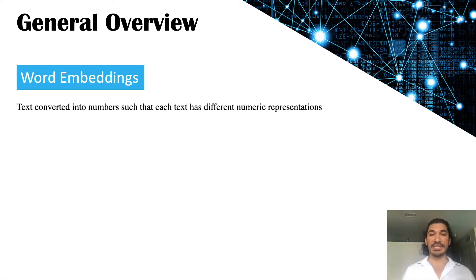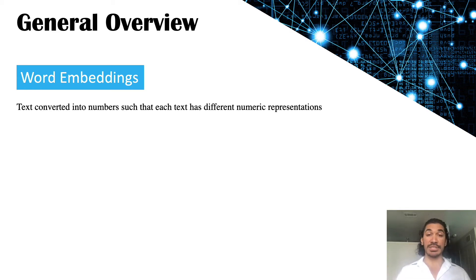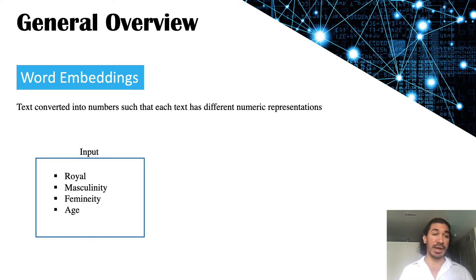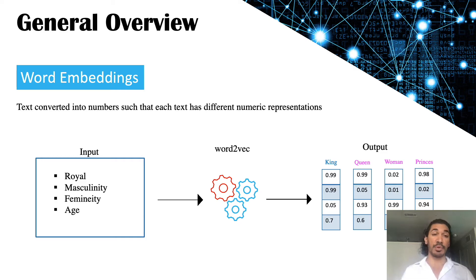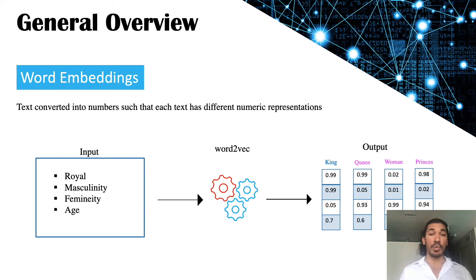Word2Vec makes decisions based on a technique called word embedding, in which text is converted into a numerical representation — each word will have a different numerical representation. For example, I have shown four different words: king, royal, masculinity, femininity, and age. These words are converted into different numerical representations after we apply the Word2Vec technique. King has a different numerical representation based on where it appears in the sentence, and queen has a different one. Once we have those numeric values for a single word, we can do all kinds of mathematical operations.